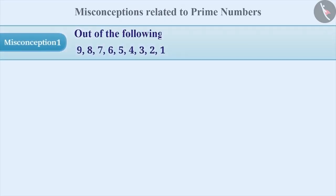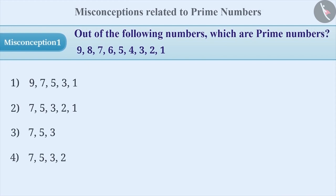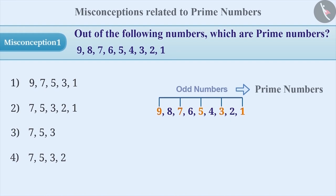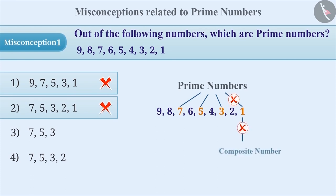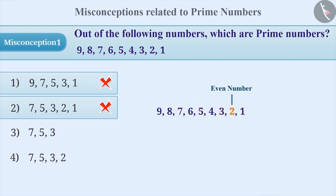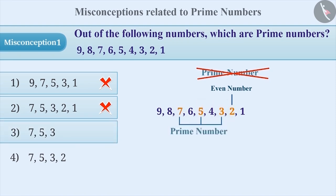Misconception 1. Out of the following numbers, which are prime numbers? Sometimes odd numbers are mistaken as prime numbers, and this understanding leads to incorrect answer option 1. Similarly, 1 is also mistaken as a prime number, which leads to incorrect answer option 2. Since 2 is an even number, it is assumed that it is not a prime number. From the given answers, only 7, 5, and 3 are considered as prime numbers, which leads to incorrect answer option 3.